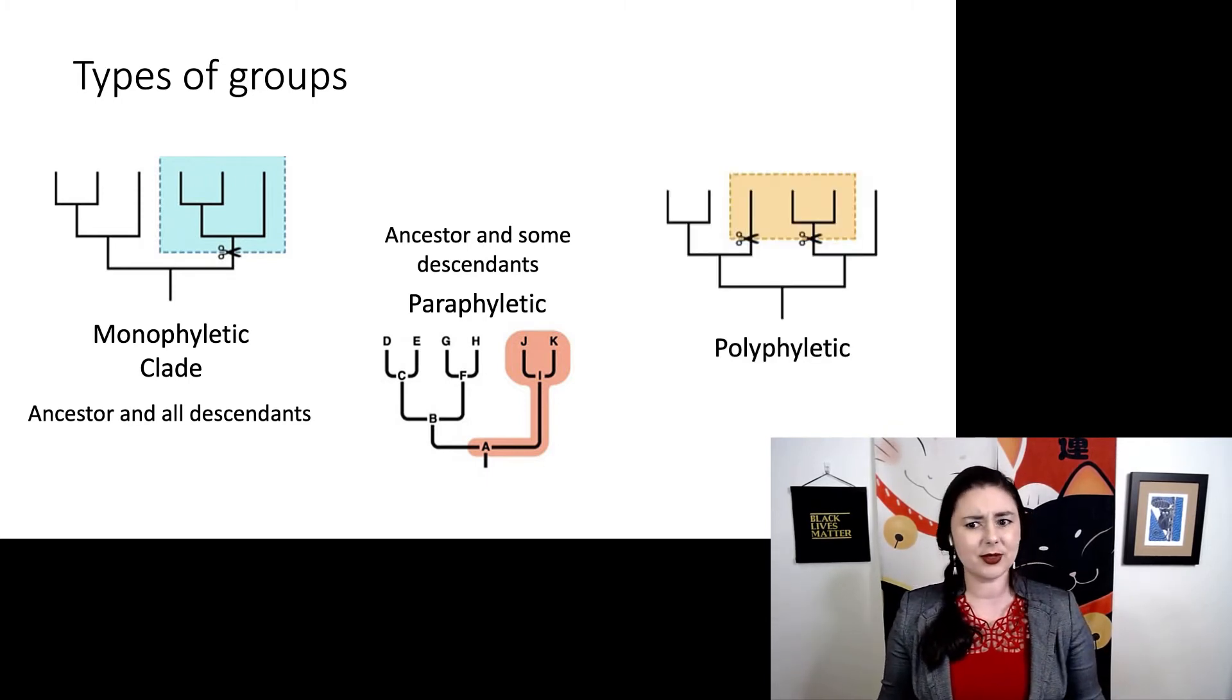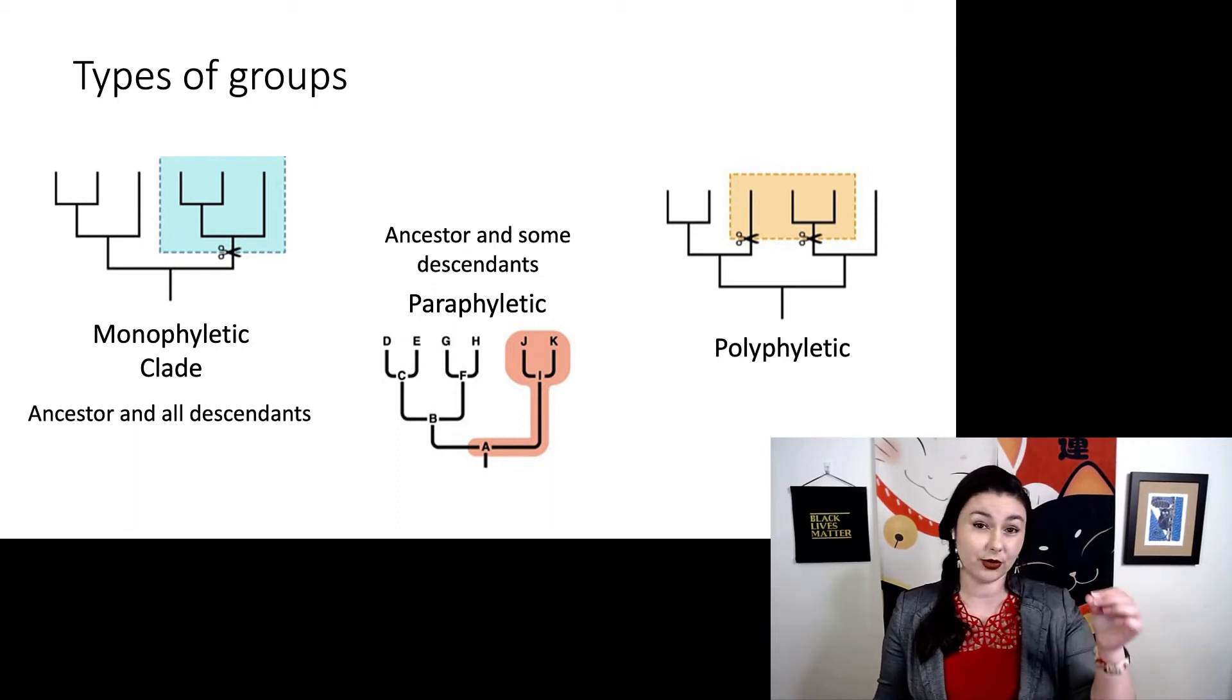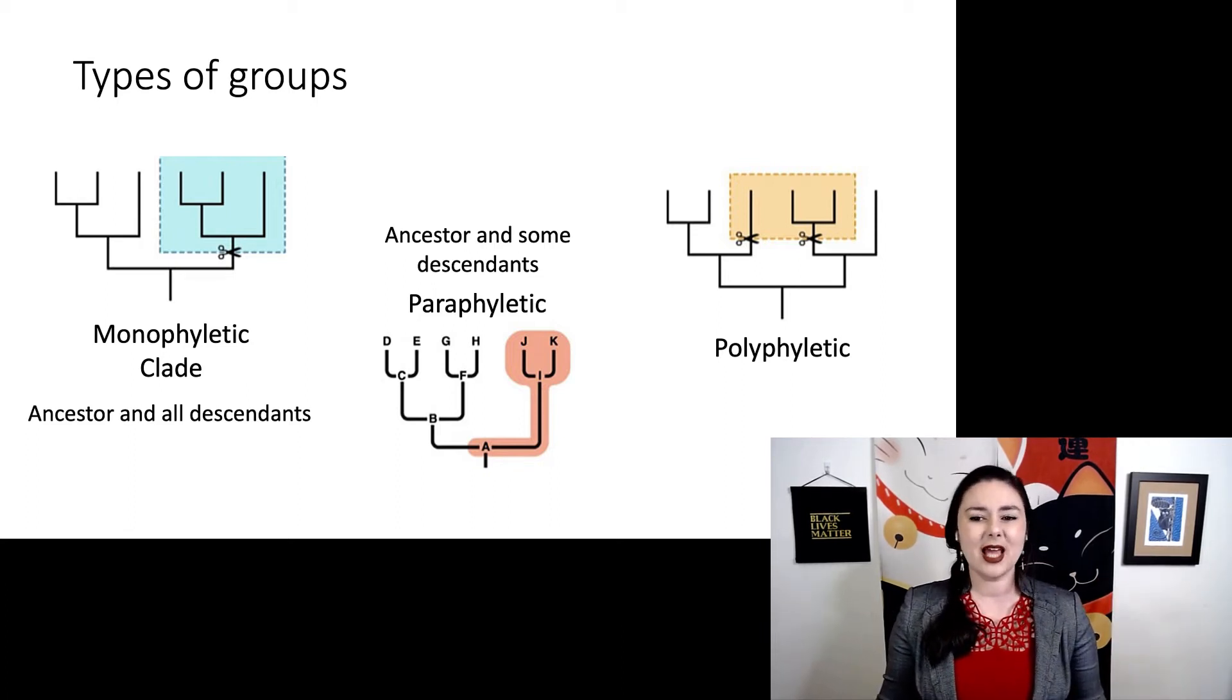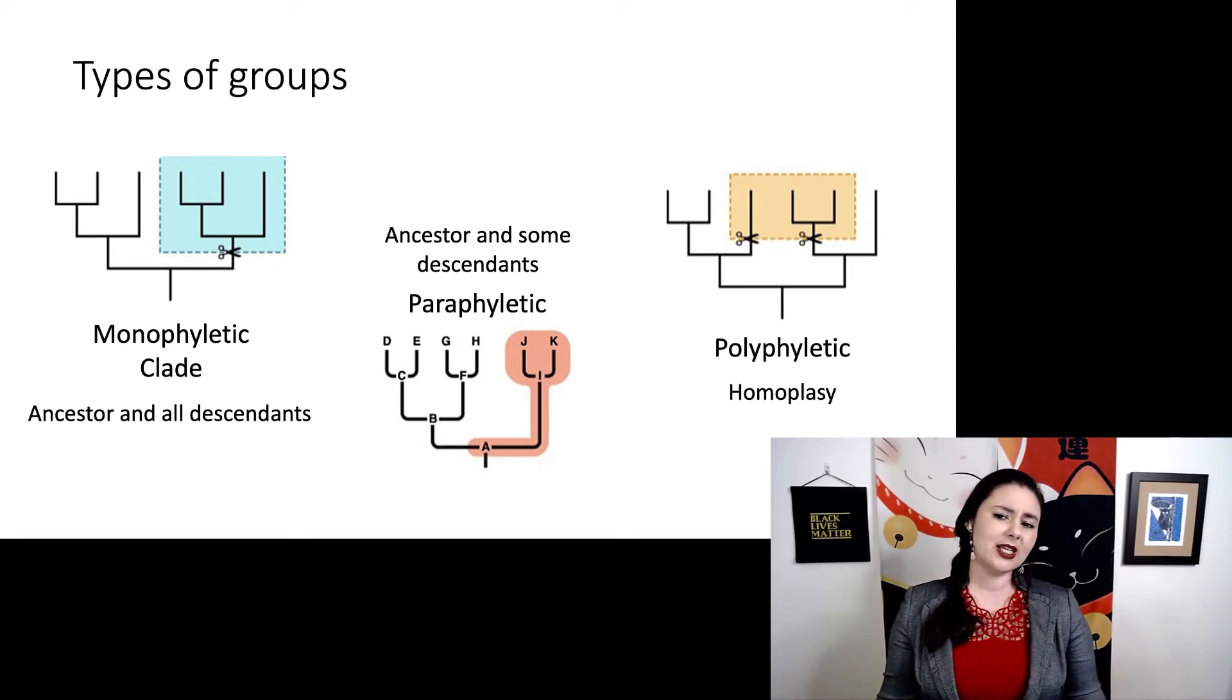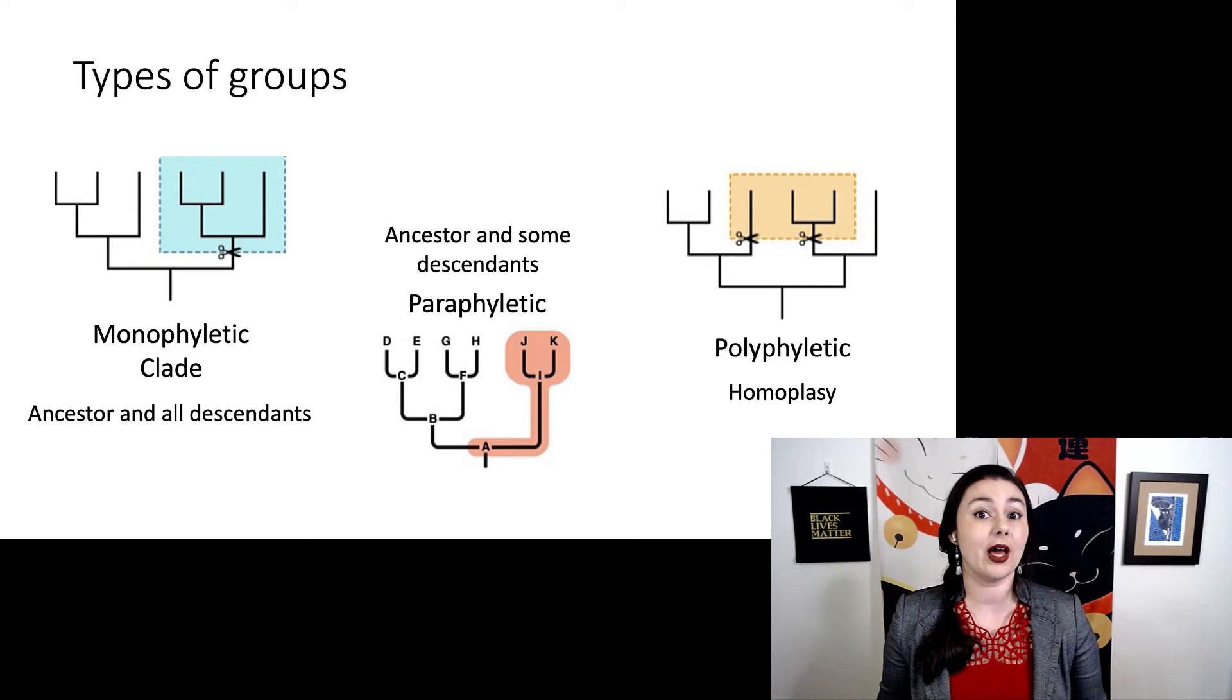This last group is a little bit different. You might notice now we have to make even more cuts here to pull these out of our tree. And now we've just taken kind of some random assortment of organisms and there's many other descendants that we are not including at all. Normally this is, we are grouping them together by homoplasia is generally what happens to be what's going on.